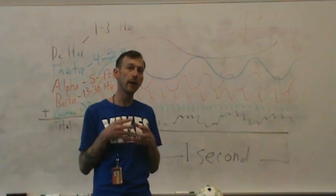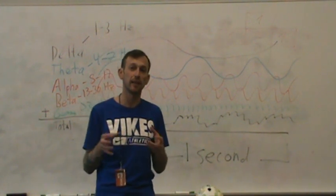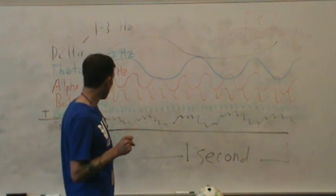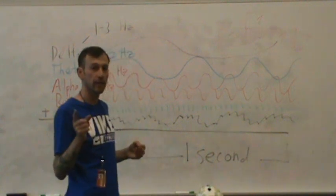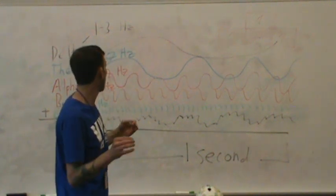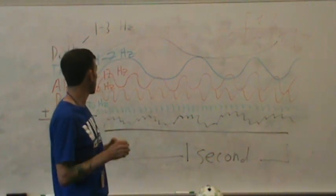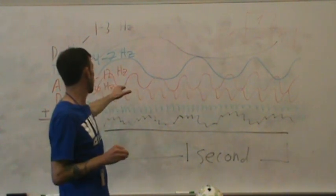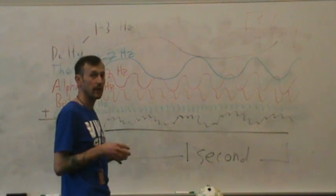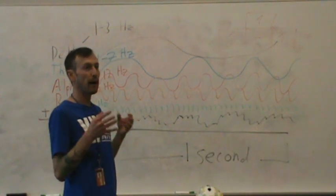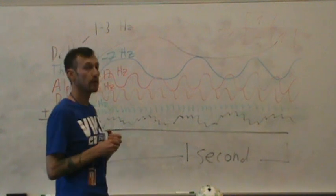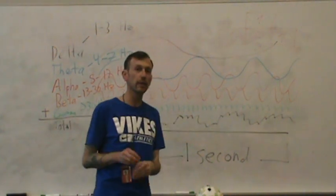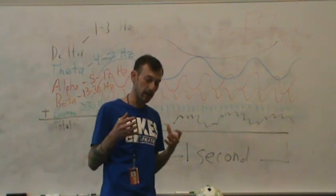And importantly, what EEG researchers are often interested in is trying to determine how much of this EEG signal, of that total signal, is made up of delta, how much of it is made up of theta, how much of it is made up of alpha, how much of it is made up of beta, and how much of it is made up of gamma. And by determining how much each of those frequency bands is in the total signal, we can learn something about what the brain is doing.